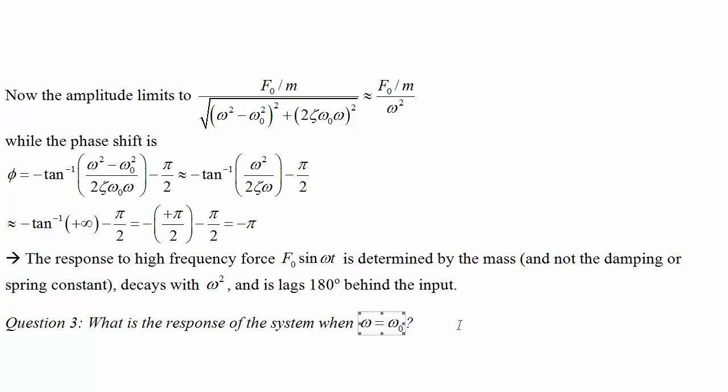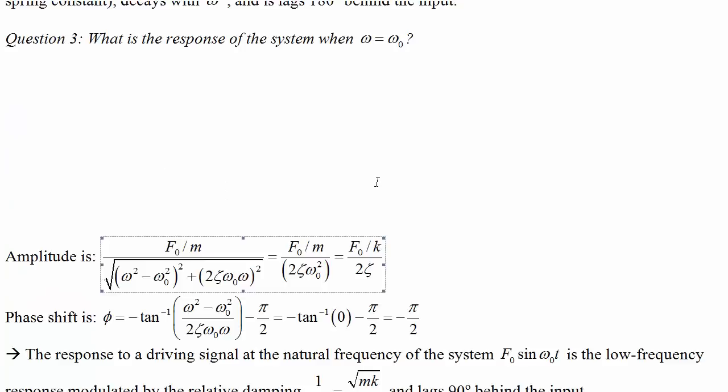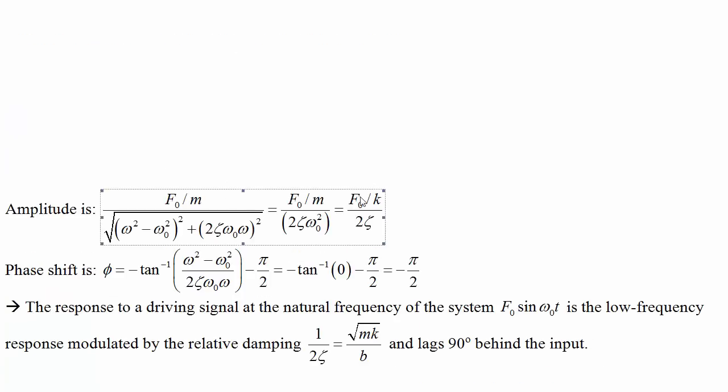What about when the frequency is ω₀, when we drive the system at its natural resonant frequency? Now, we have an amplitude that depends on the DC behavior divided by 2ζ. For low damping, we get a bigger amplitude, and the phase shift is -π/2. The response depends only on the DC response and the damping, and it's π/2 behind the input.